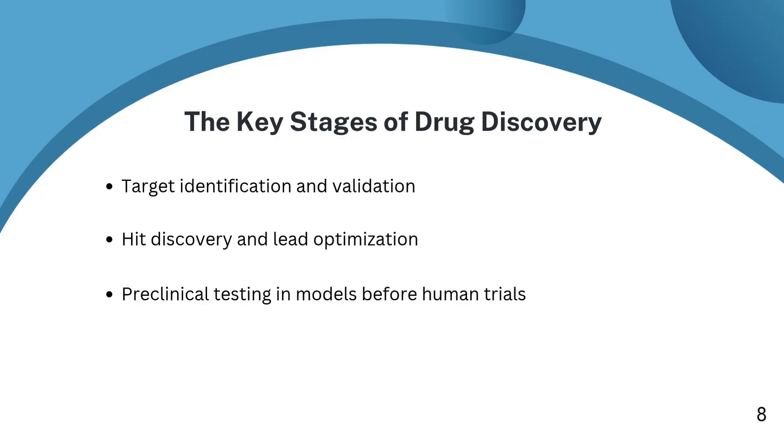The fourth stage is clinical trials, which will be explained later in the second part of this tutorial. Once a candidate passes preclinical testing, it moves to human trials, phase one through phase three, where safety, dosing, and therapeutic benefits are carefully measured.